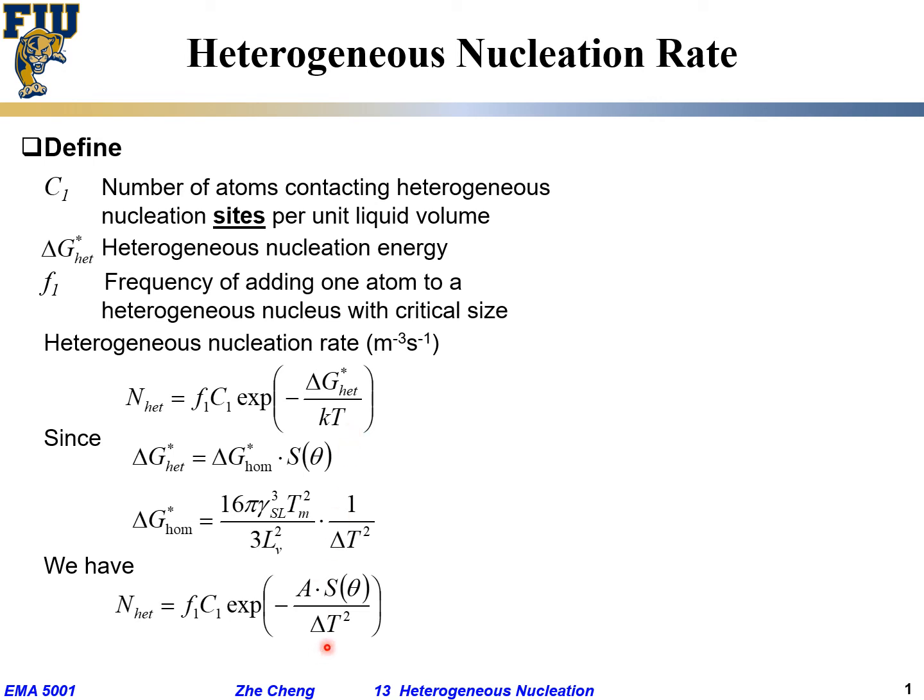But then we kind of dropped it when we write here. The temperature is here, but we dropped it, we only kept the ΔT, the undercooling term. T is your actual temperature.